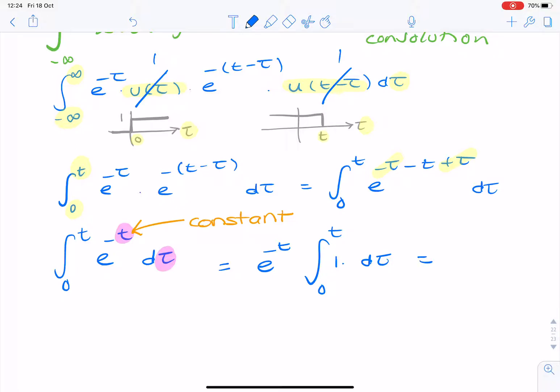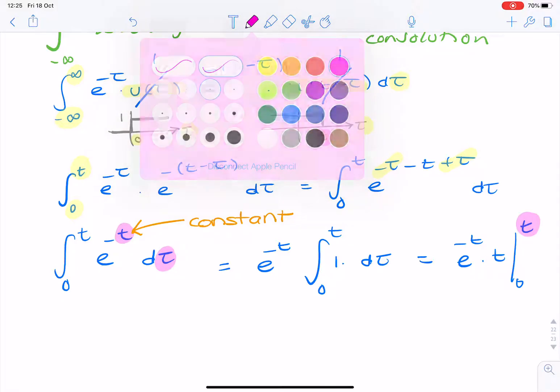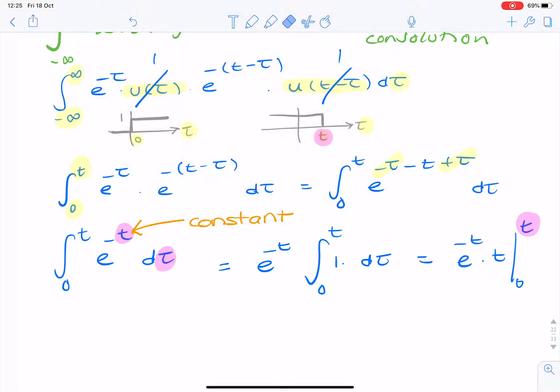So, we're actually just integrating 1 d tau from 0 to t. And that's simply t, isn't it? So, it's e to the minus t times t from 0 to t. Now, remember, this only applies when t is greater than 0. So, that's our condition here. So, t has to be greater than 0 because if t is less than 0, then there's nothing to integrate.